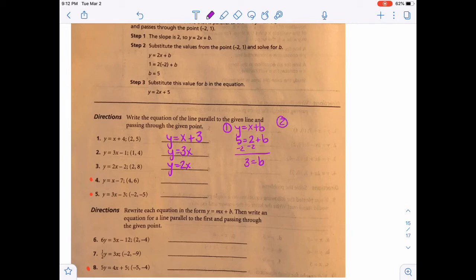For number 2, you have y equals 3x plus b, and we need to plug in the 1 and the 4. So 4 equals 3 times 1 plus b. Then that's 4 equals 3 plus b. Subtract the 3 on both sides, and you get 1 for the b. So come back over here and say plus 1.